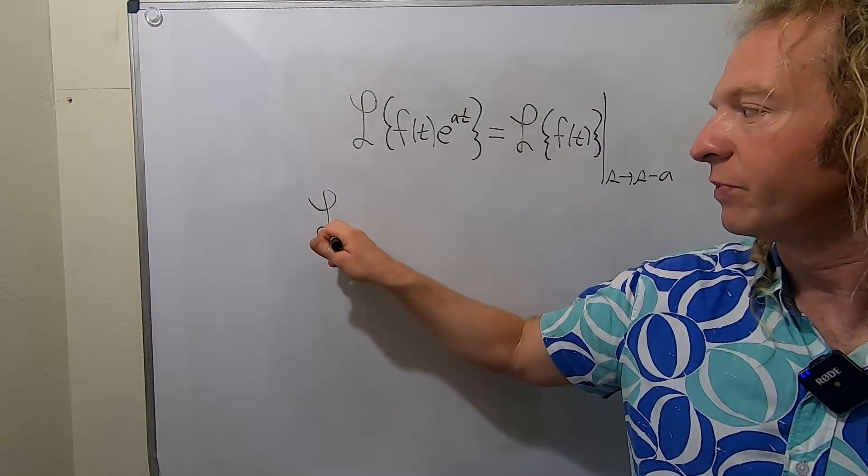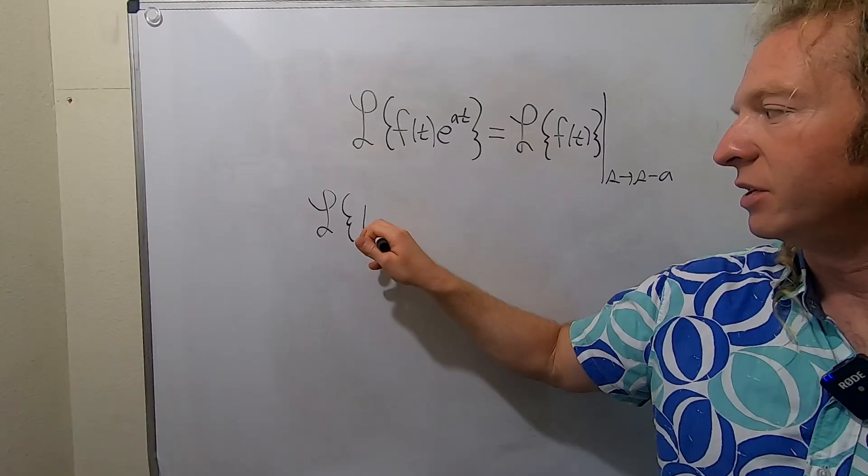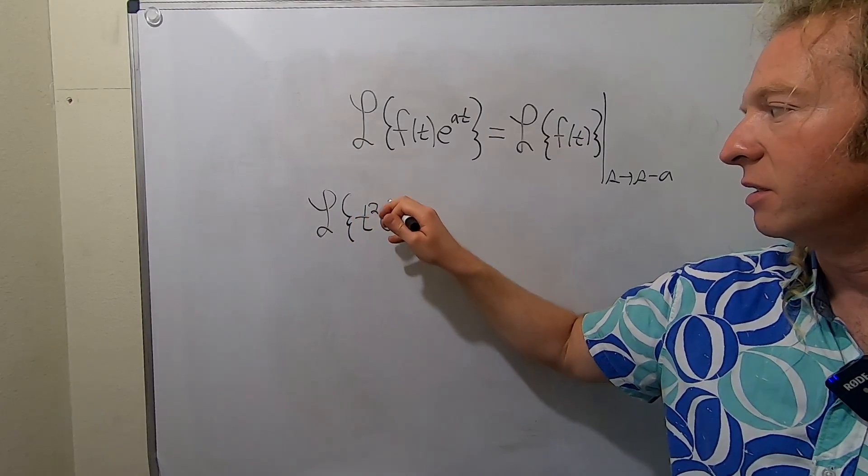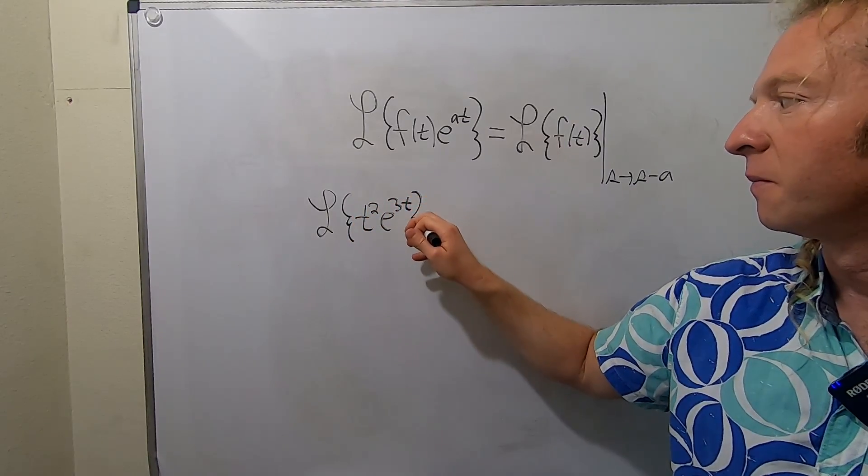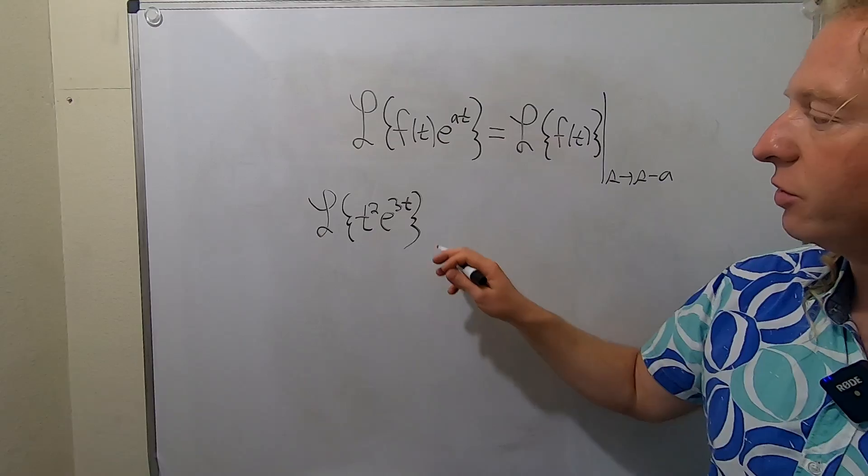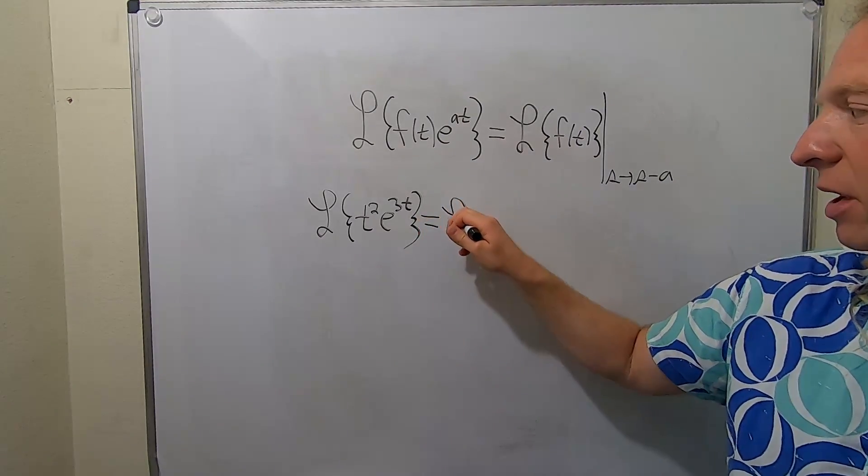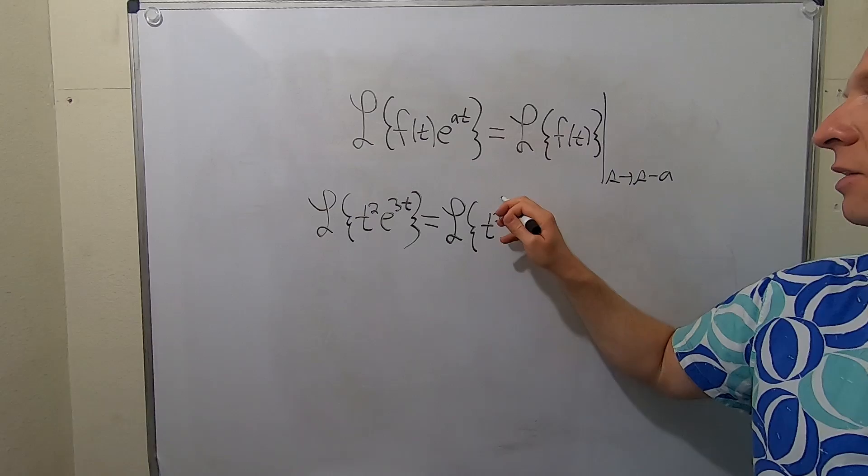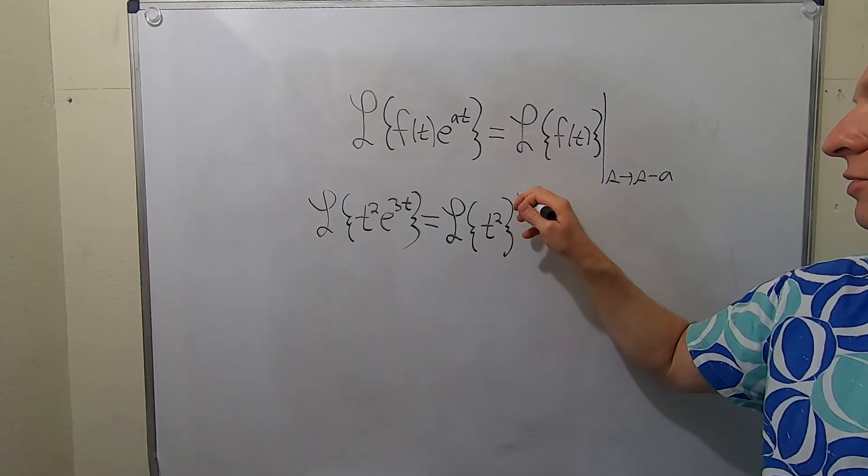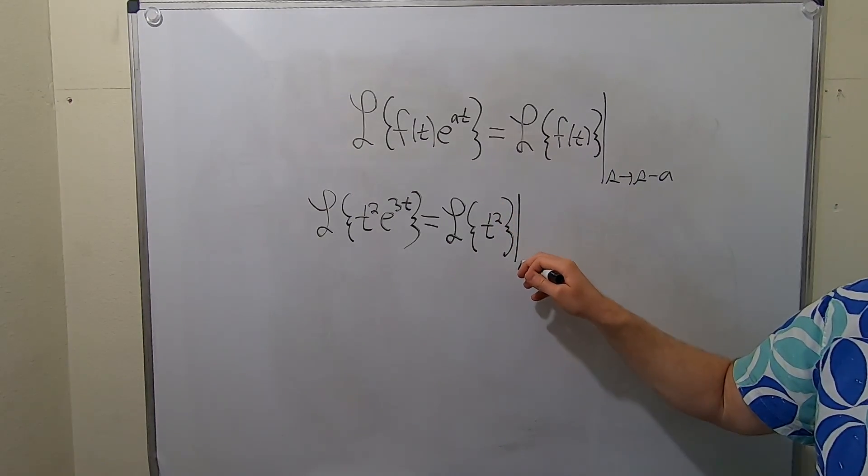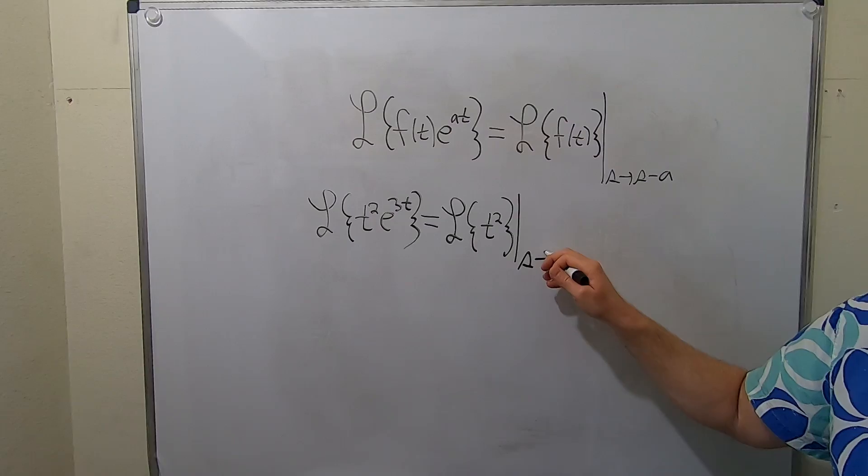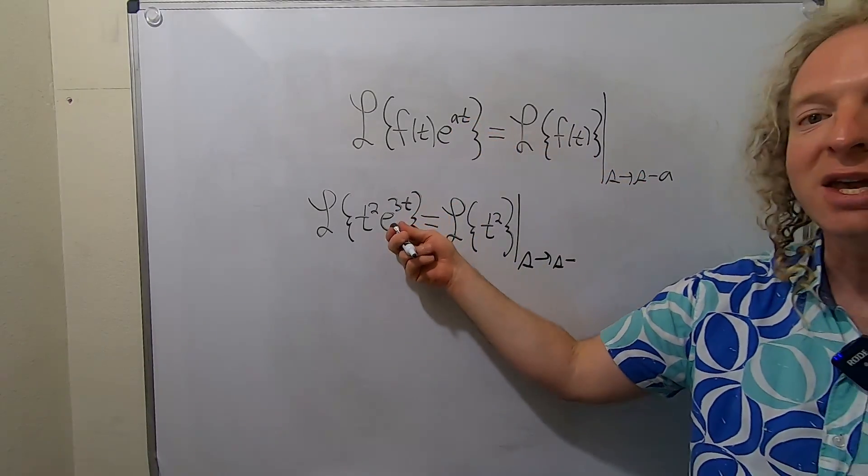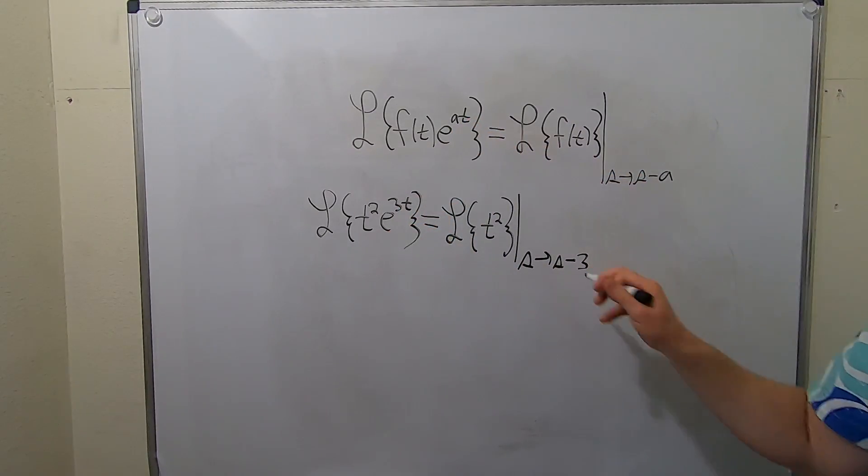Say we have the Laplace of t squared e to the 3t. Okay, so all you do here is you drop the e. So this is the Laplace of t squared. And then you replace the e with a shift. So you draw a line. And this time it would be s to s minus a. So your a is 3, so it's s minus 3.